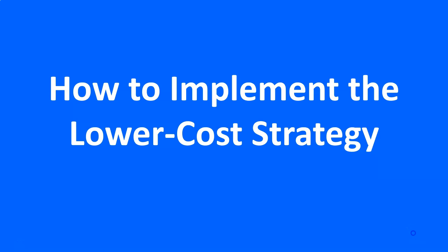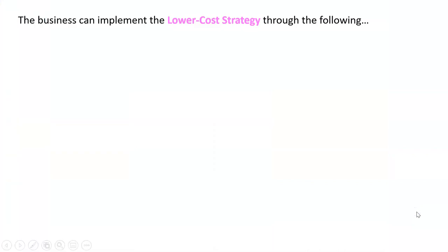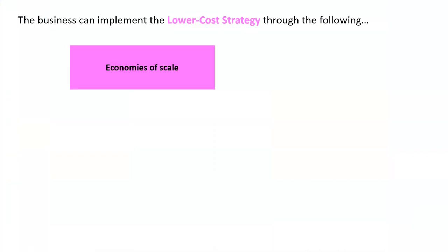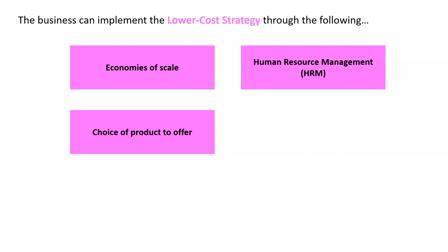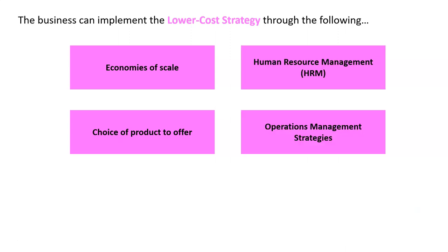Now we know what the lower cost strategy is in Porter's theory, let's look at how we can implement it. We're going to keep it real simple. There are four key ways to implement the lower cost strategy: one, economies of scale; two, choice of product to offer; three, human resource management; four, operations management. We're going to apply these to Aldi in another video later on — Aldi is very good at doing all of these things.